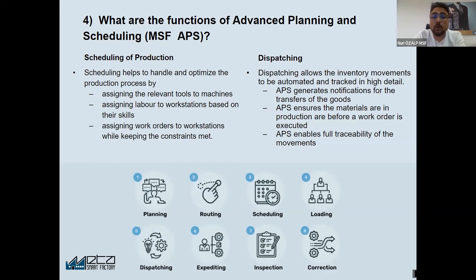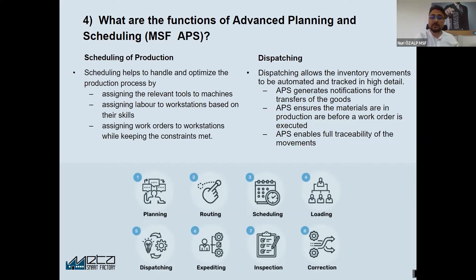You can optimize all your production based on alternative machines and alternative tools. The second important topic when you schedule is labor. Each labor has different skills and you have resources for your operators, and based on these resources the system should schedule and optimize.